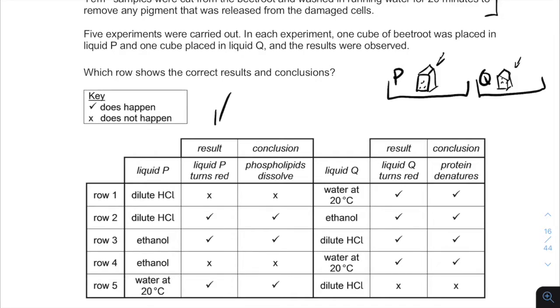So, seeing the tables, turning red basically means the lipid bilayer dissolves or the permeability really increased. So, when you have an X, it means it didn't, and when you have a checkmark, it means it did.